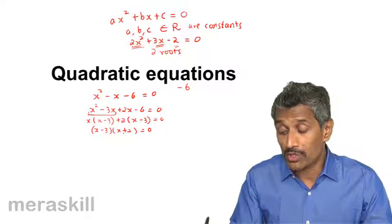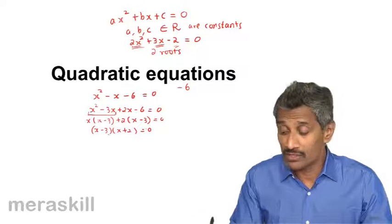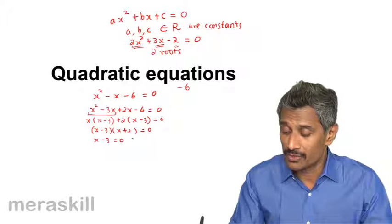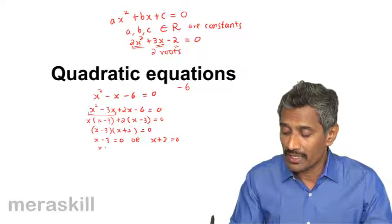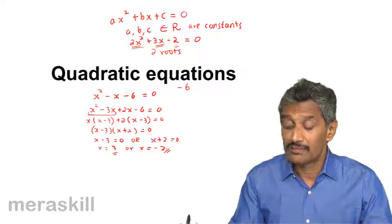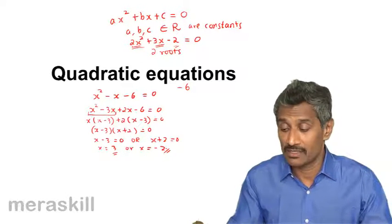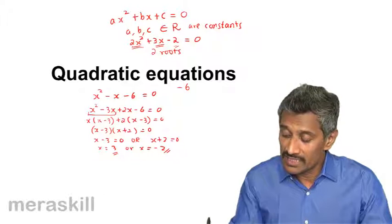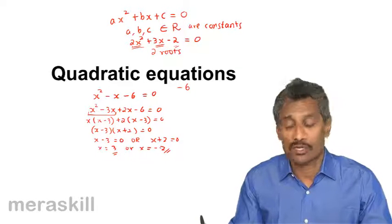So we get (X minus 3)(X plus 2) equals 0. The product of two numbers is 0, so either the first number is 0 or the second number is 0. We get X equals 3 or X equals minus 2. Hence there are two values of X which satisfy the equation. As I said, a quadratic equation has two roots.